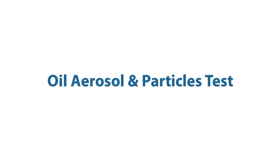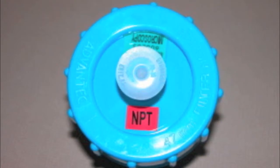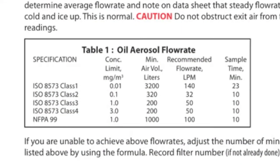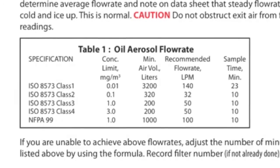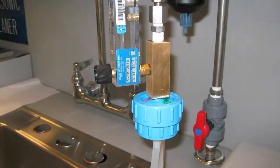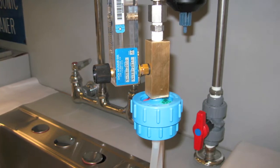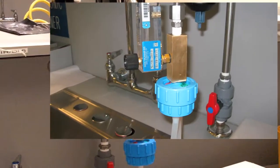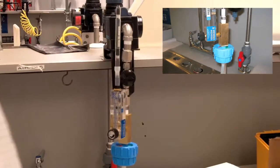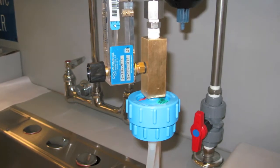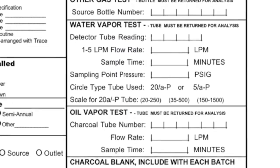The first sample will be the oil aerosol and particles test, which is captured on the 47 millimeter filter cassette. Sample times vary from 10 minutes to 23 minutes depending on the purity class selected. Please note that the filter cassette must remain in place during the other two tests. If the water and oil vapor test combined run longer than the oil aerosol test,